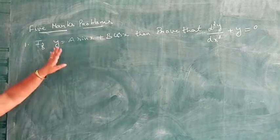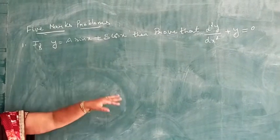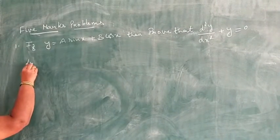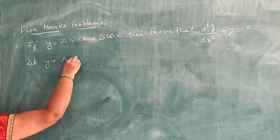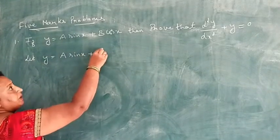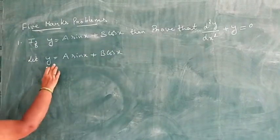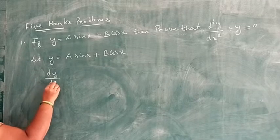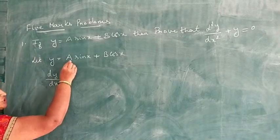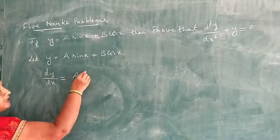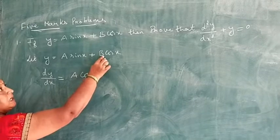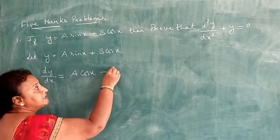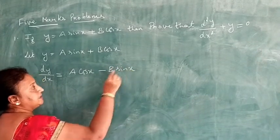To prove this, consider y equals a sin x plus b cos x. Differentiating with respect to x: dy/dx equals a cos x plus b times derivative of cos x, which is minus sin x, giving dy/dx equals a cos x minus b sin x.